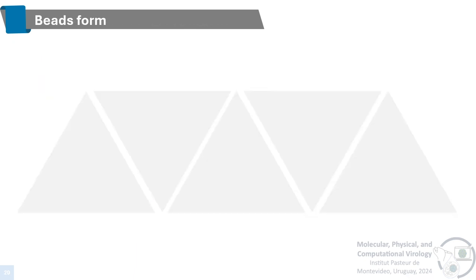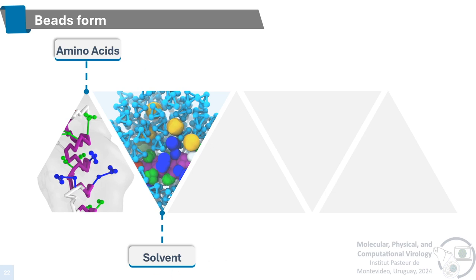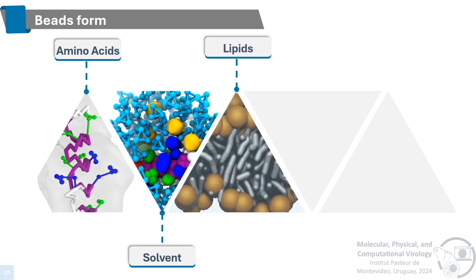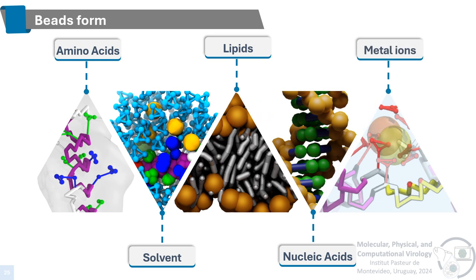What parameters are available for simulations with coarse-grained models? Most coarse-grained models have amino acid parameters that can be used in protein simulations, peptide simulations, or IDP simulations. Some also have parameters for water molecules and counter-ions. Lipids are also found in most coarse-grained models and are widely used in membrane simulations. Nucleic acids can be found in some models, or in specialized coarse-grained models created for DNA simulations. Another commonly found parameter is metal ions, which can be used in simulations where coordinate interactions by metal ions are essential.